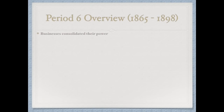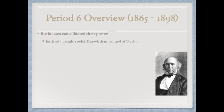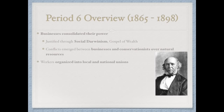Businesses during this time consolidated their power and justified it through Social Darwinism and the Gospel of Wealth. The Gospel of Wealth was written by Andrew Carnegie, who urged wealthy people to give their money to better society and communities. Conflicts also emerged between businesses and conservationists over natural resources — businesses wanted access while conservationists pushed to preserve or conserve those areas. Workers during this time organized into local and national unions.